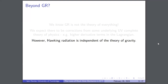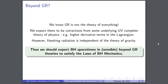Hawking radiation relies purely on the geometry of the event horizon, so it's independent of the theory of gravity, assuming we have a null hypersurface as an event horizon. Therefore we expect Hawking radiation still to hold in sensible beyond-GR theories. So we should expect black hole spacetimes in physically motivated beyond-GR theories to satisfy the laws of black hole mechanics, and we're going to need to modify those proofs of the laws.